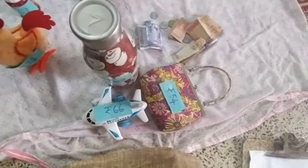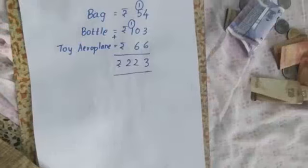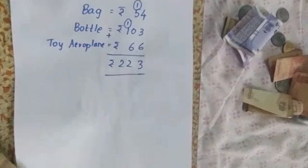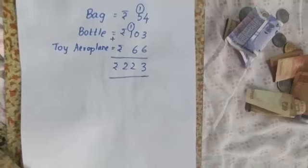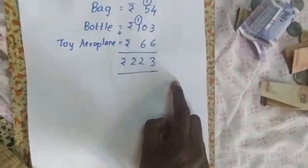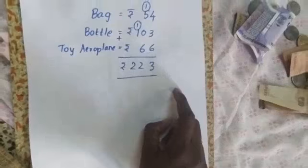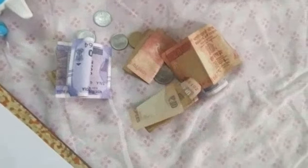Now I am going to prepare a bill for this first. Now see, I have prepared the bill for bag, bottle, toy airplane. I have added the total. So I have to give the shopkeeper rupees 223. How will I give? The shopkeeper doesn't have any change. I have to give the exact amount. So 200 plus 20 plus 3.